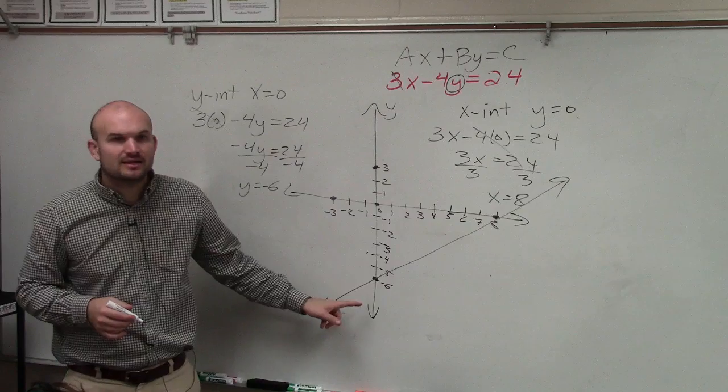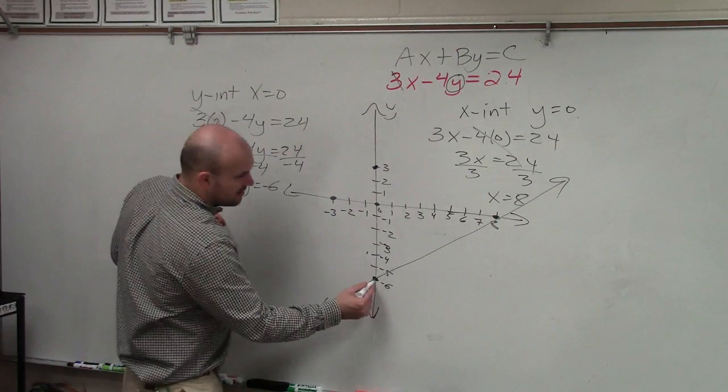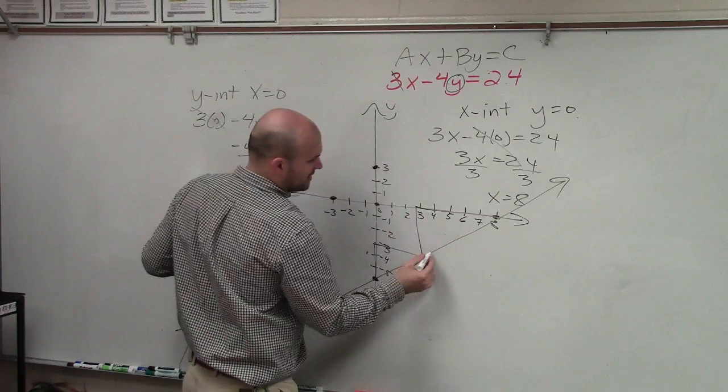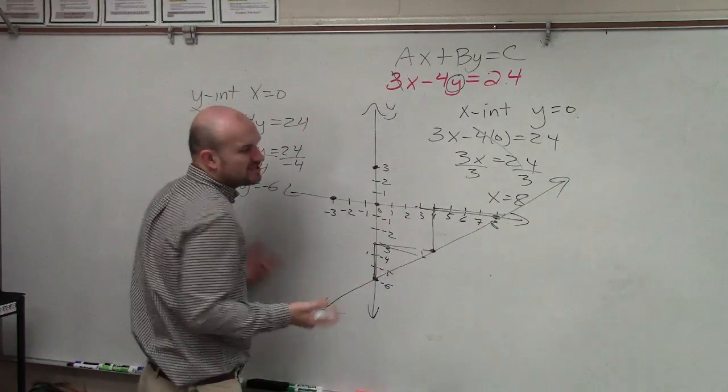Is that the same thing we had in the last problem? Down 6, up 3 over 4, right? Up 3 over 4, up 3 over 4. It's the same as the last problem.